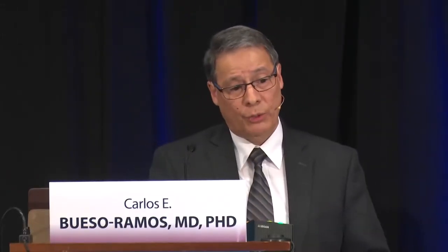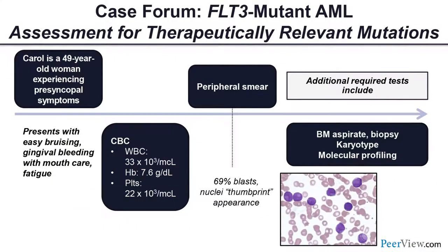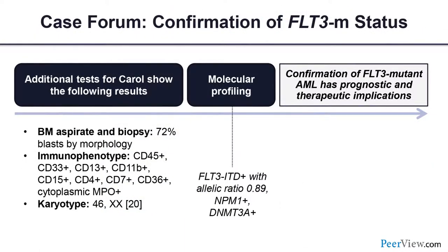Now let's switch to FLT3-mutant AML. Carol is 49 years old with easy bruising, gingival bleeding, and fatigue. CBC shows leukocytosis with thrombocytopenia. There are 69% blasts with a thumbprint nuclear appearance on the aspirate. Additional testing included aspirate, biopsy, karyotype, and molecular profiling. The biopsy showed 72% blasts with myeloid immunophenotype, cytoplasmic myeloperoxidase present, and the karyotype was diploid.